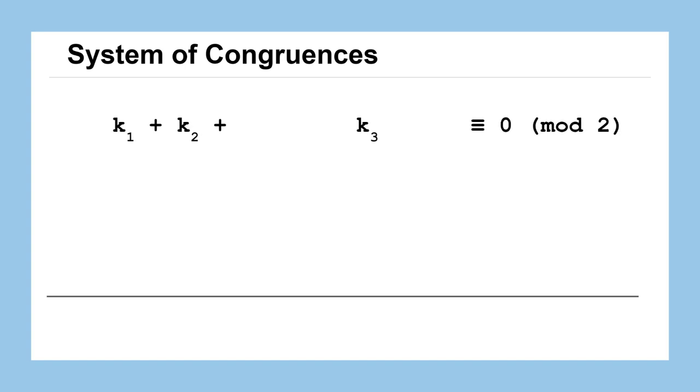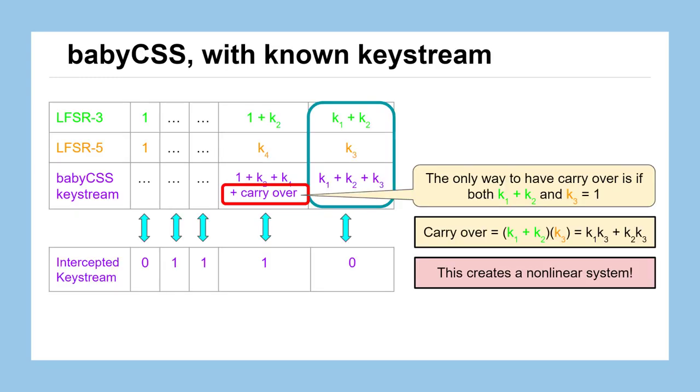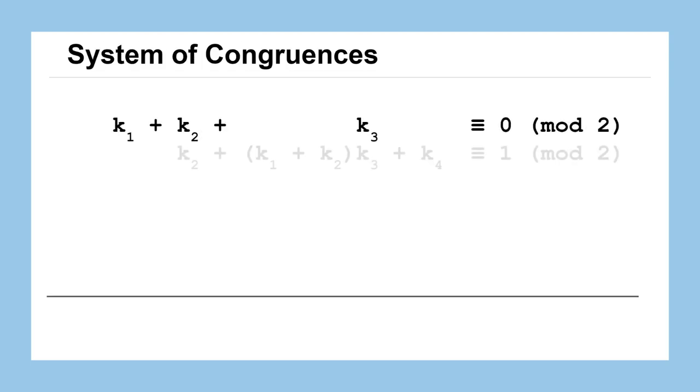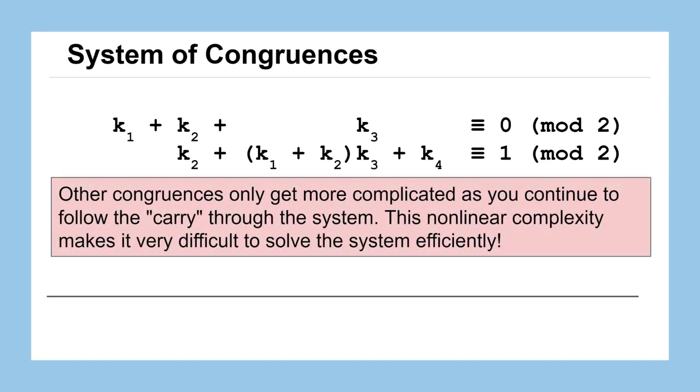you see we'd have our first output K1 plus K2 plus K3, which is equivalent to 0 mod 2. That's because that's what the equivalent bit in that column that we intercepted in the keystream was set to 0. But then our next one would be much more challenging: it would be K2 plus, here's our carry over, the K1 plus K2 times K3 plus K4, and this is our non-linear term. That K3 term has a non-linear component to it.